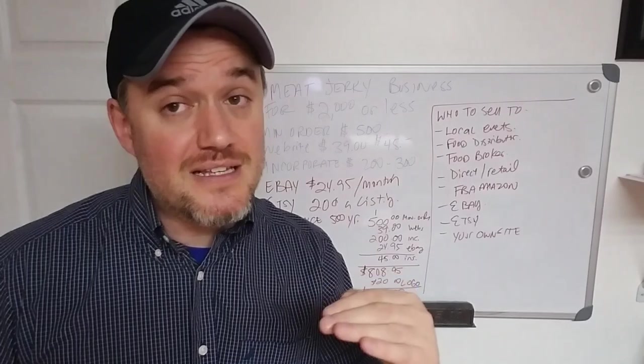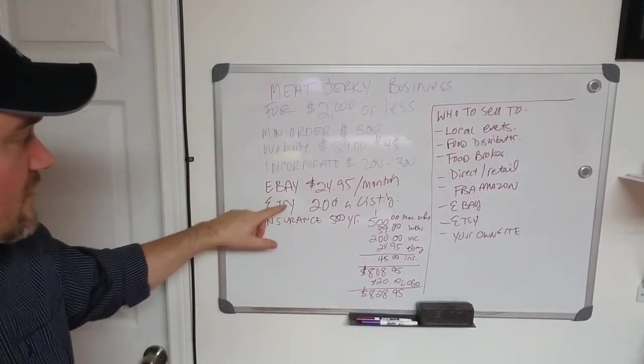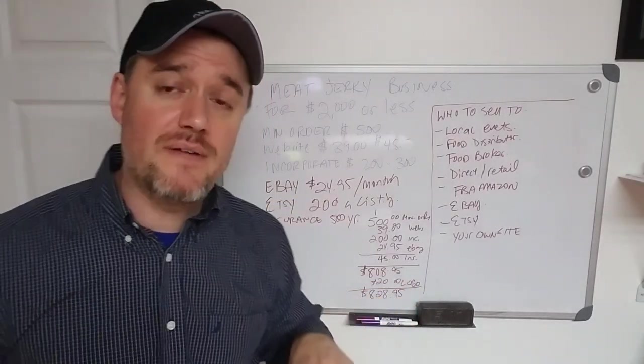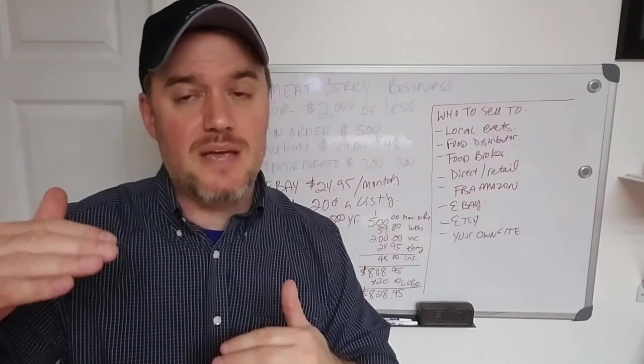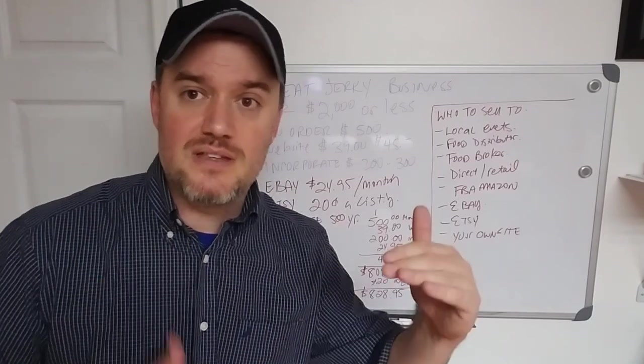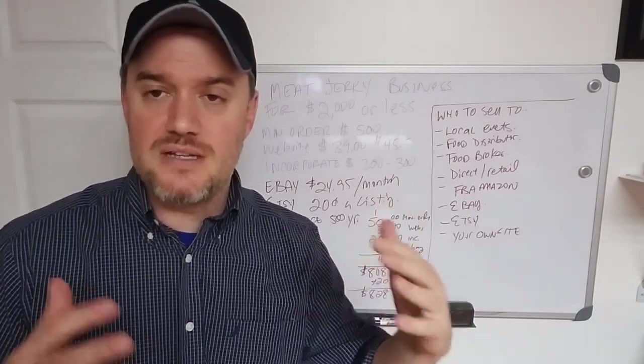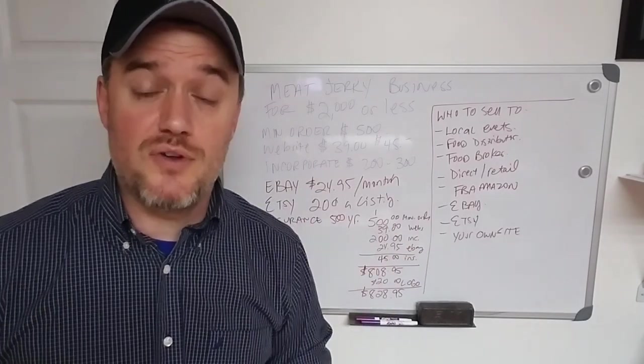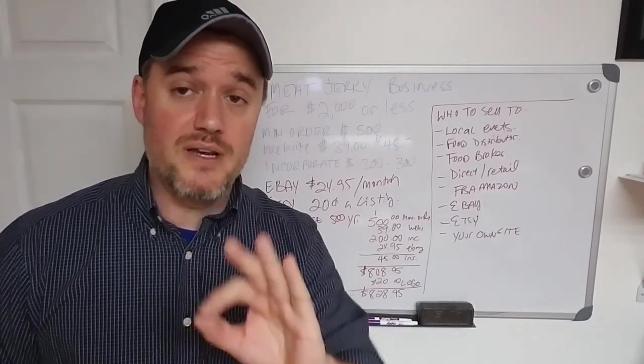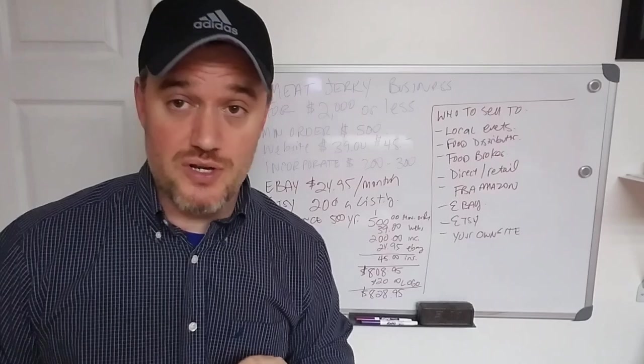So, you can create a store very inexpensively at around $25 a month. They have different types, different tiers for business or personal seller or private seller, that type of thing. So, around $25 to $30 a month, you can get a store up and running and start listing your jerky.